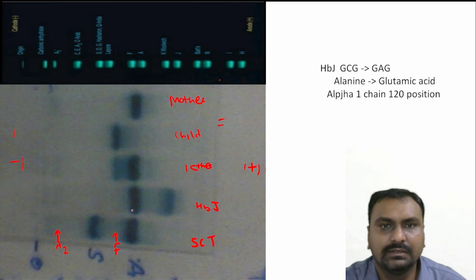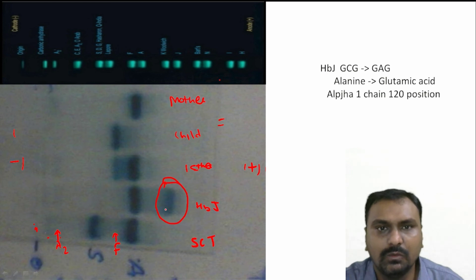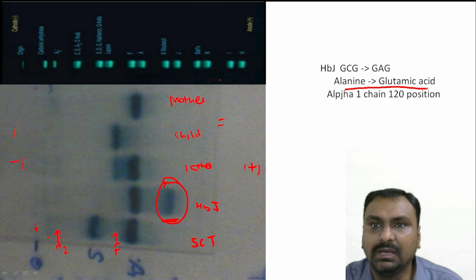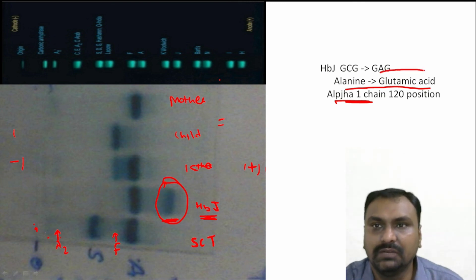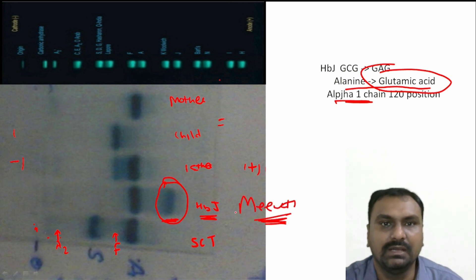This is the diagram. This is the point of application, carbonic anhydrase A2, and this is a hemoglobin that will move faster than HbA. It is around 20–25%. The defect here is that alanine is replaced by glutamic acid in the alpha chain — this is HbJ Meerut, an alpha chain variant. Because of the extra negative charge, it will move faster than HbA. HbJ Meerut can be differentiated by HPLC.